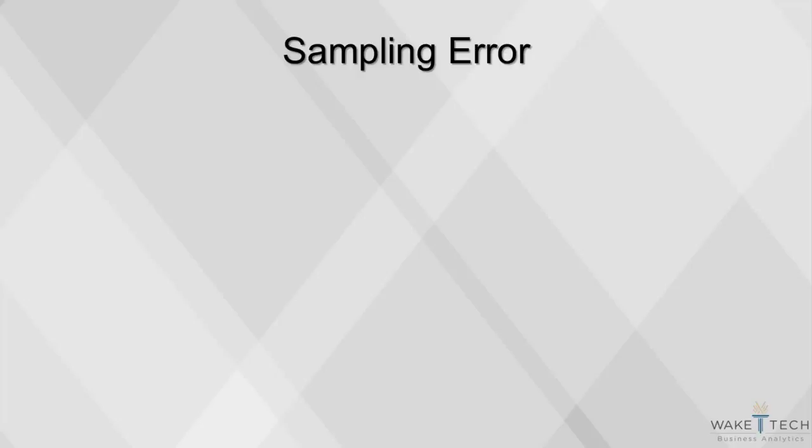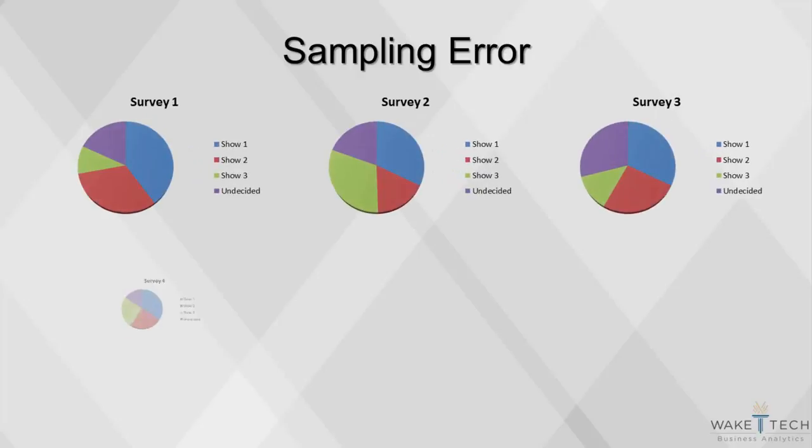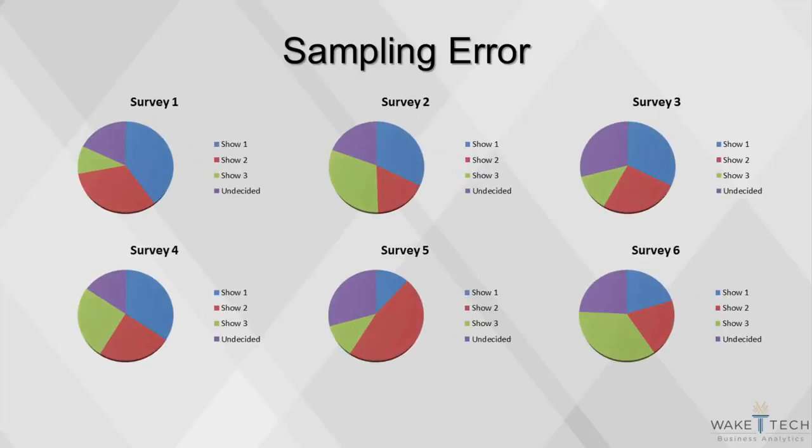But it's unlikely that one sample can provide accurate measures of behavior for the entire population. An estimate of the population parameter, or the proportion watching a television show, is likely to be different for different samples of the same size, and is likely to be different from the population parameter. This is called sampling error.